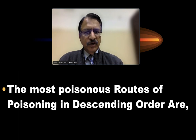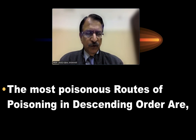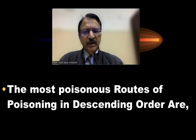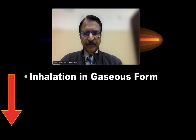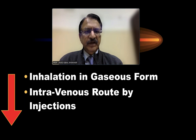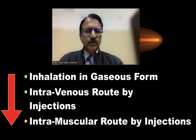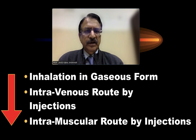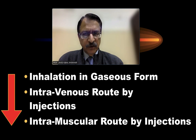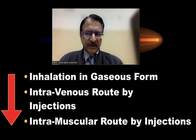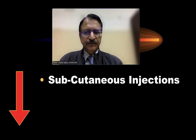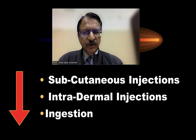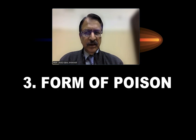The most poisonous routes of administration in descending order are: inhalation (gaseous form), intravenous, intramuscular, subcutaneous, intradermal, and then ingestion (swallowing). Inhalation is the most active route for gaseous poisons, and intravenous is the fastest for liquids.